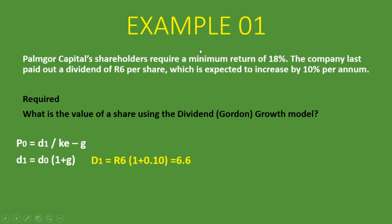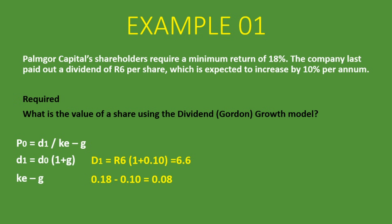D1 is calculated from D0. We are told the company last paid out a dividend of six rand, so D0 is six rand — it was the last time they paid. We multiply that by one plus the growth rate. We are told the dividend is expected to increase at 10% per annum. So D1 is six rand times one plus 0.10, giving us D1 of 6.6 rand. Now divide that by KE minus G: 18% minus 10%, which gives us 8%.